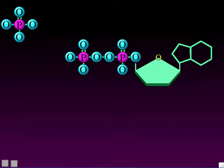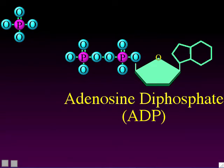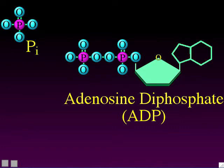When that last phosphate has been broken off, it's no longer an ATP molecule — it's now an ADP molecule, which stands for adenosine diphosphate. Diphosphate means two phosphates. The other phosphate that was broken off is now an unattached phosphate floating around, written as Pi, standing for inorganic phosphate — meaning it's not attached to any other organic molecules in the cell.